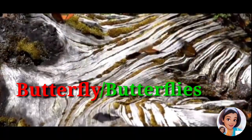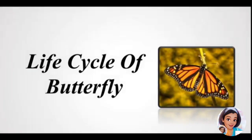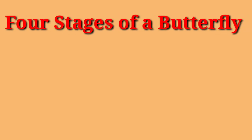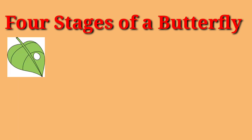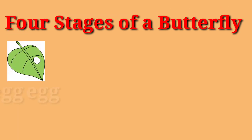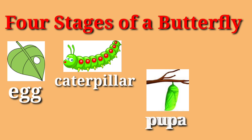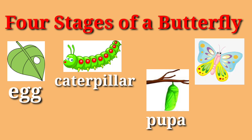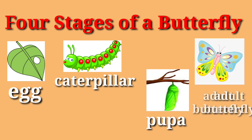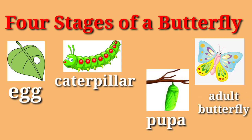You see, kids, there are different kinds of colors of the butterfly. Now, there are four stages of a butterfly: first, egg; second, caterpillar; third, pupa; and the last one is adult butterfly.